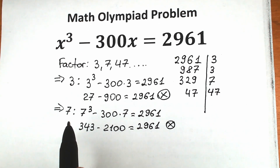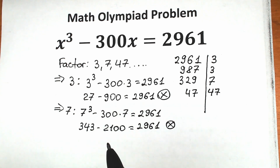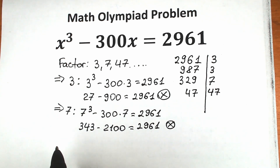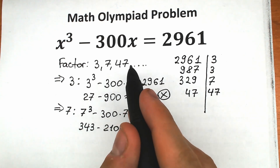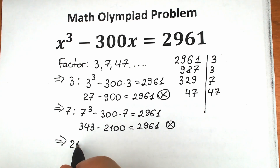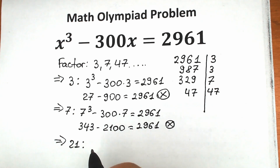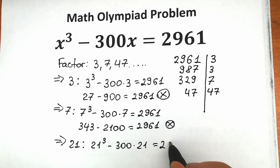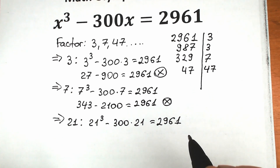Also, since 3 and 7 are both factors, we can check their product 21. So 3 times 7 will also be a factor. Let's check 21 real quick: 21 cubed minus 300 times 21 equals 2,961. Maybe 21 is a great factor for us.